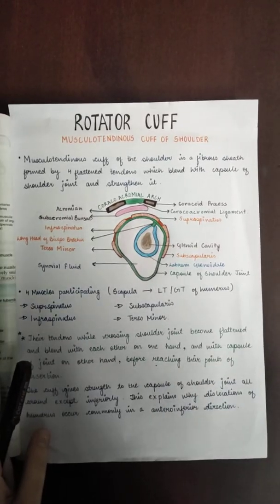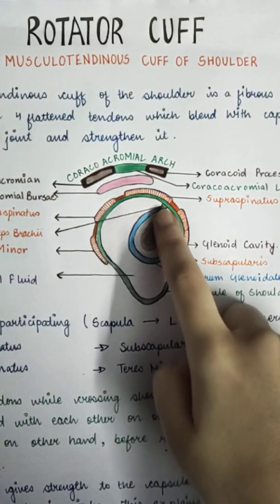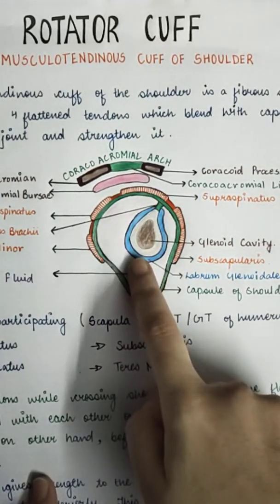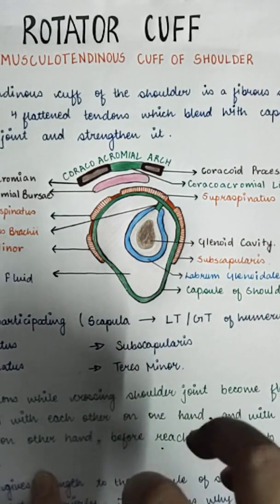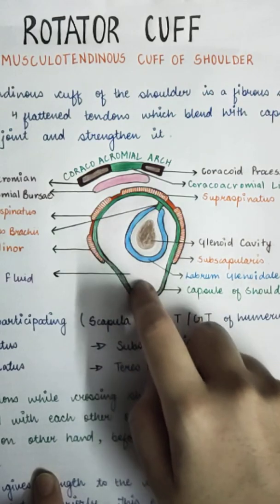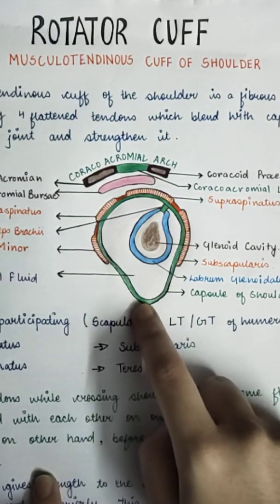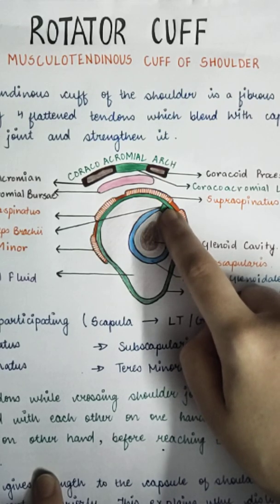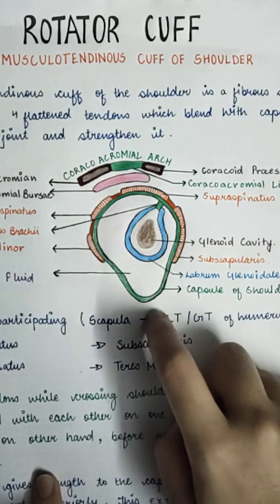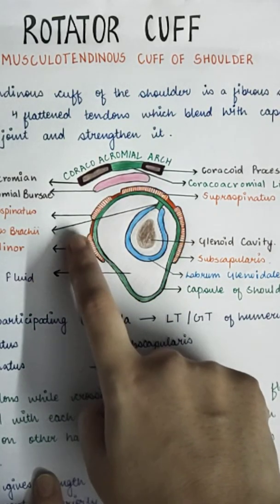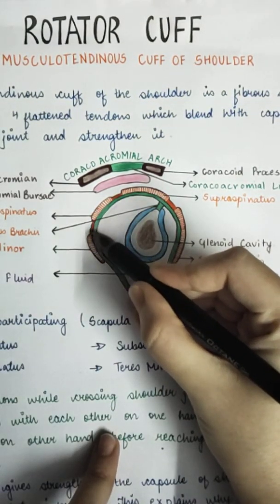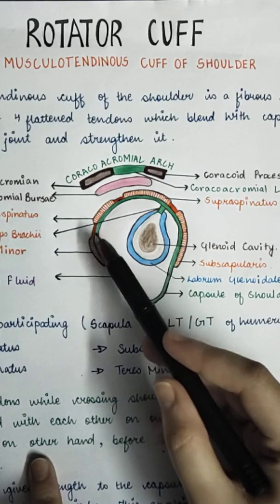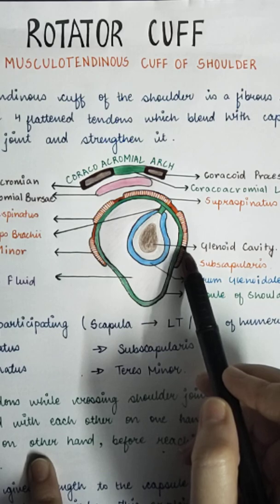Now let's look at the diagram. The glenoid cavity is shown where the humerus articulates. The surrounding synovial fluid and the capsule of the shoulder joint are visible. The long head of biceps tendon is also shown within the capsule. The muscles blending with the shoulder joint capsule are teres minor, infraspinatus, supraspinatus, and subscapularis, all visible around the glenoid cavity.